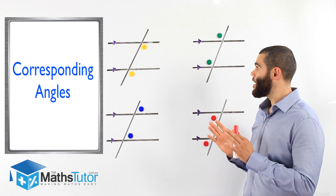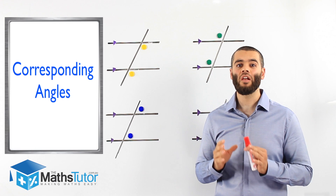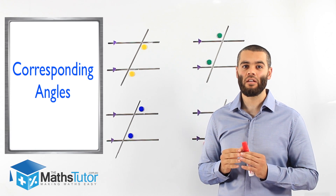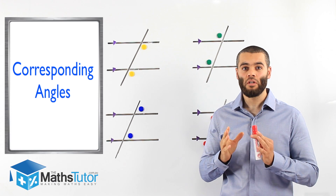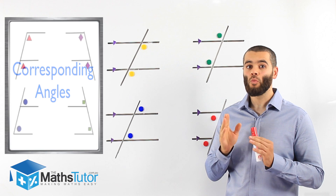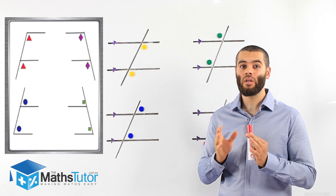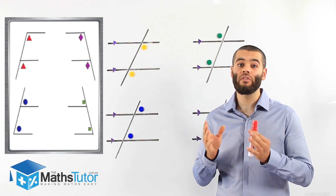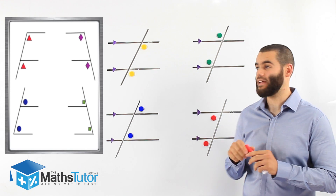As we did with alternate angles, we need to use the highlight trick to know how to locate and identify these angles in the parallel lines with the transversal intersecting them. How do we do it? We look for an F-looking shape. The F can be a normal F, or upside-down, or back-to-front, or even a back-to-front upside-down F. I'll show you what I mean by that.